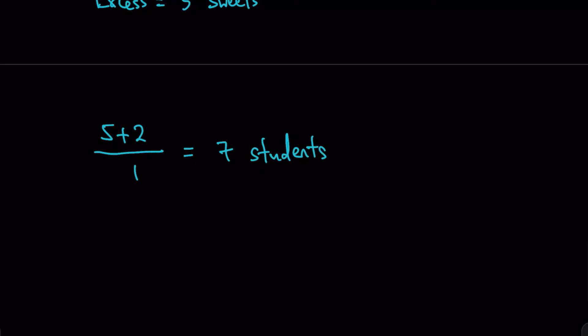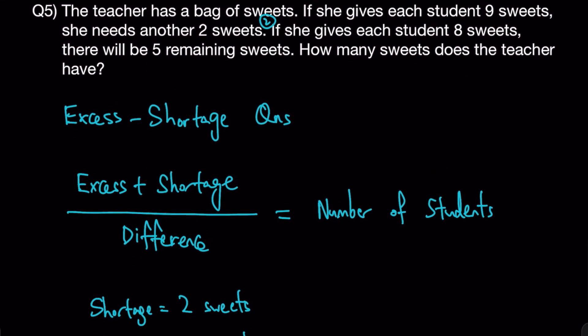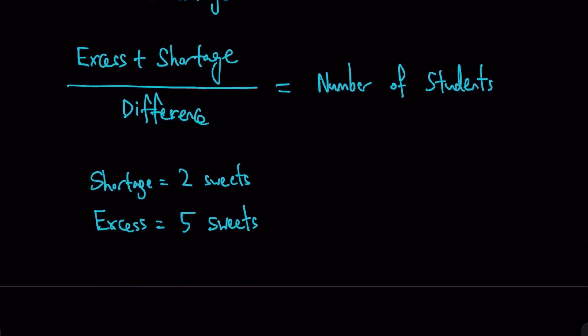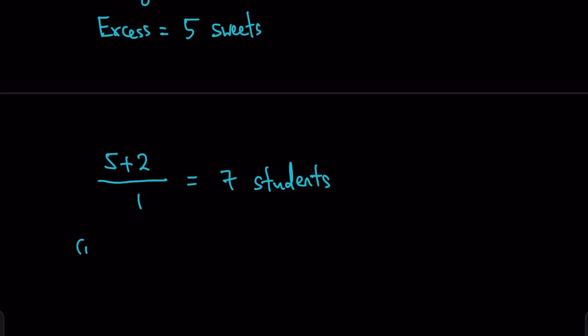But we're not done with the question by finding the students only. We have to use that number to find the number of sweets. So take any case. Let's use case 1. We can have 7 times 9 because we gave each student 9 sweets. But you will need another 2 sweets, which means that there is a shortage. So if there's a shortage, you have to minus 2 and that will represent the number of sweets that the teacher have. 63 minus 2 equals 61 sweets.